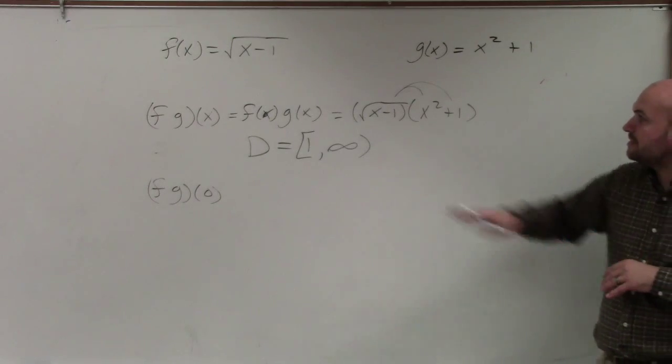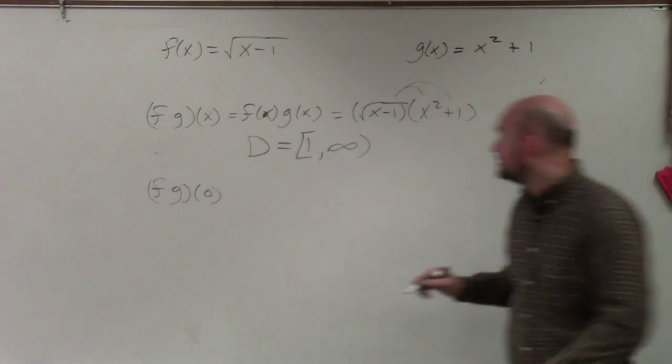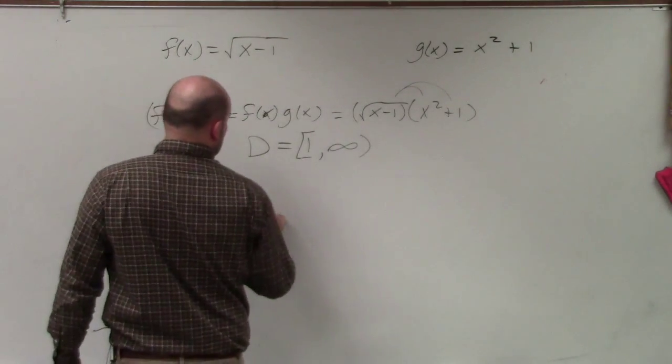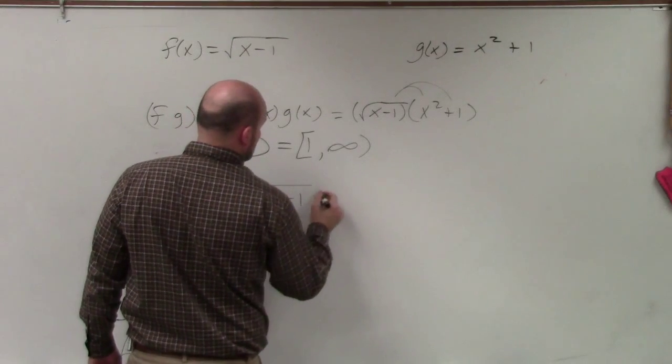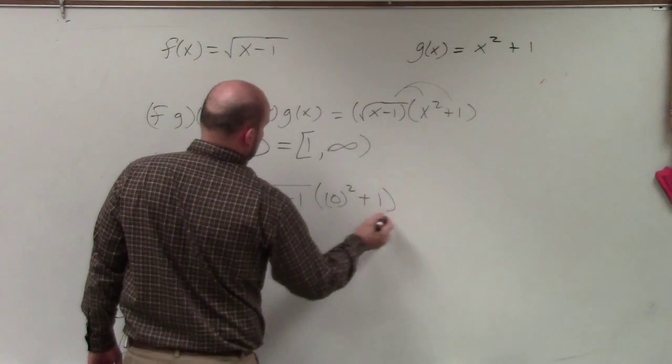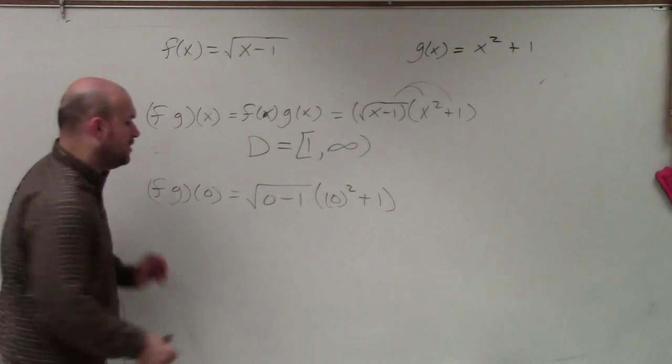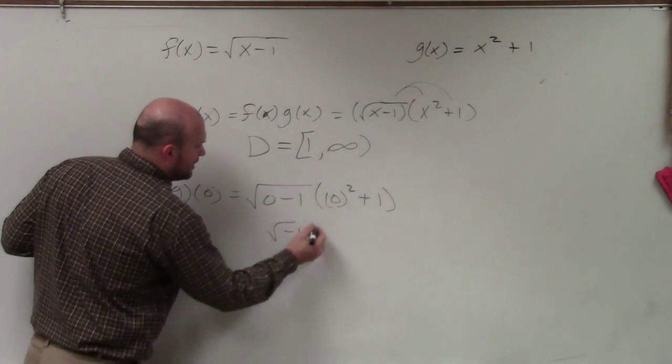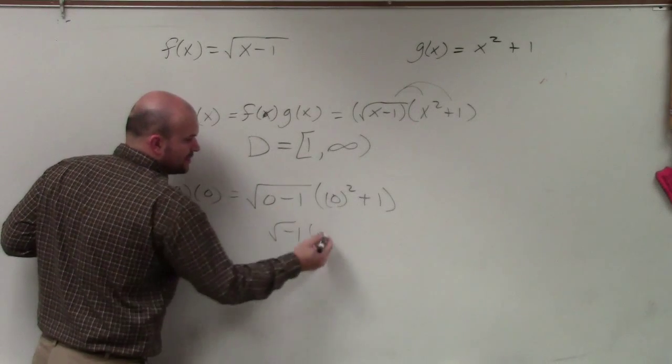Then let's evaluate for 0. Again, all I need to do here is plug in my value. Then you're going to get a completely wrong equation. Well, what's wrong about it? Because you can't use 0. Well, 0 minus 1 is going to give me the square root of negative 1 times 0 squared, which is 0 plus 1.